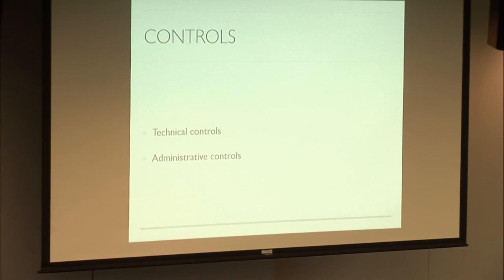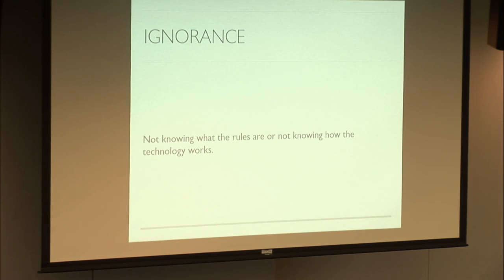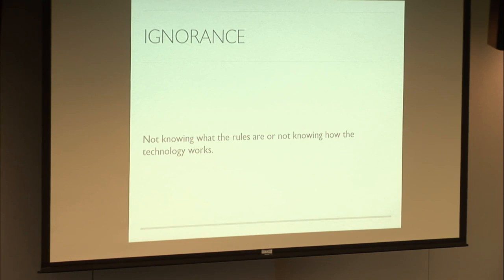As soon as you start talking about controls you run into people problems. The first is ignorance — it happens at all levels: technical people not reading the rules, and rule-makers not knowing how technology works. Lawmakers, managers, regulators, auditors, and technologists are all affected. A couple of weeks ago I talked to someone processing healthcare data in Amazon RDS Postgres who didn't know their AWS contract excludes Postgres from storing healthcare data — they were breaking the rules purely out of ignorance.